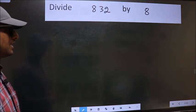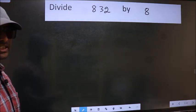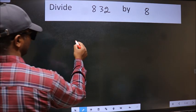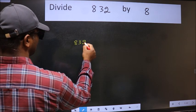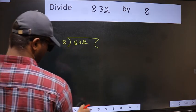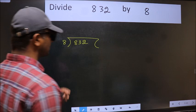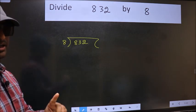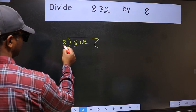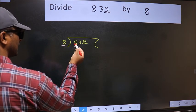Divide 832 by 8. To do this division, we should frame it in this way: 832 here and 8 here. This is your step 1. Next, here we have 8 and here 8. When do we get 8 in the 8 table?